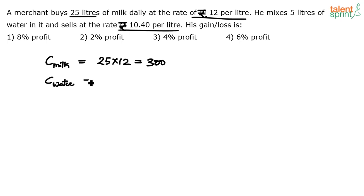Remember, in such cases when we're talking about mixing water, we generally consider the cost price of water to be zero. Water is available free of cost—that's the whole idea. So he's bought 25 liters of milk at ₹12 per liter, total cost on milk is ₹300.